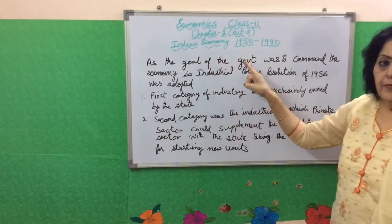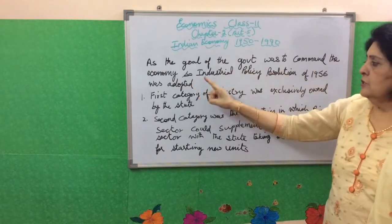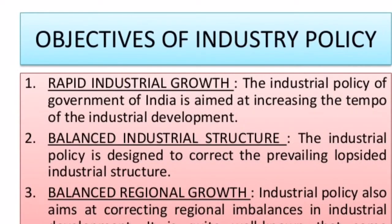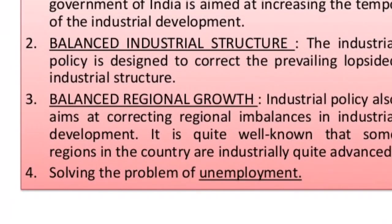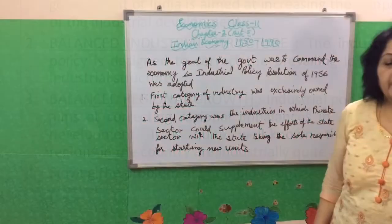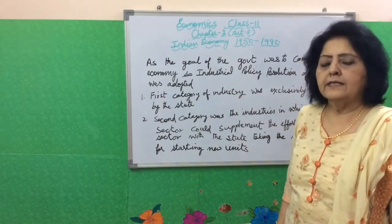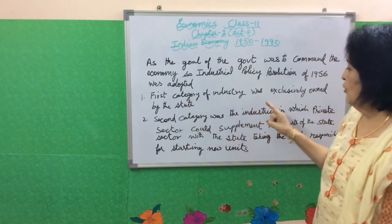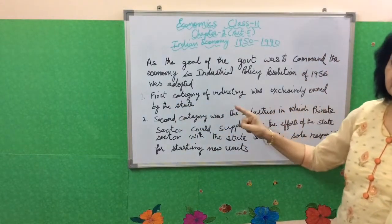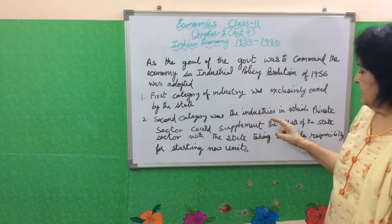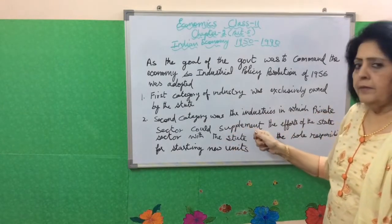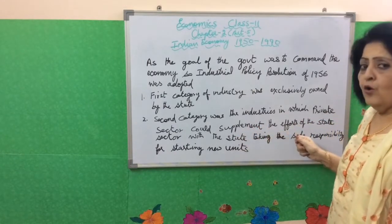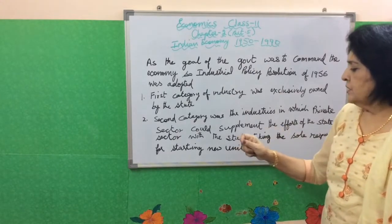As the goal of the government was to command the economy, the Industrial Policy Resolution of 1956 was adopted. The main features of the resolution were that industries were categorized into three categories. The first category consisted of industries exclusively owned by the state. The second category consisted of industries in which the private sector could supplement the efforts of the state sector, but with the state taking sole and whole responsibility for starting new units.